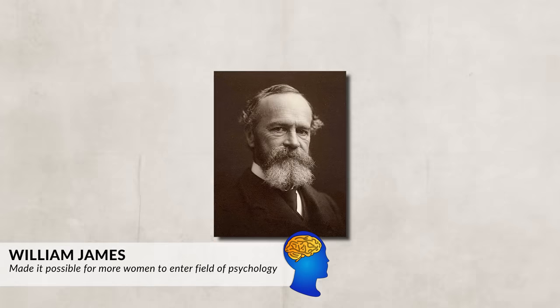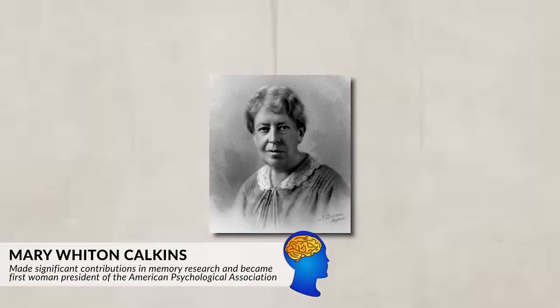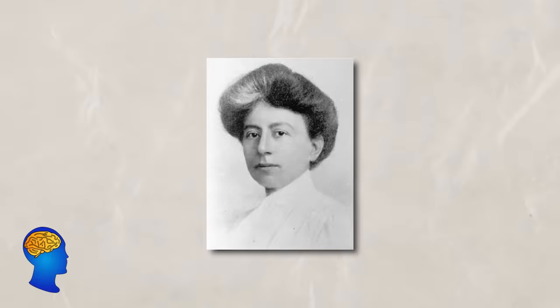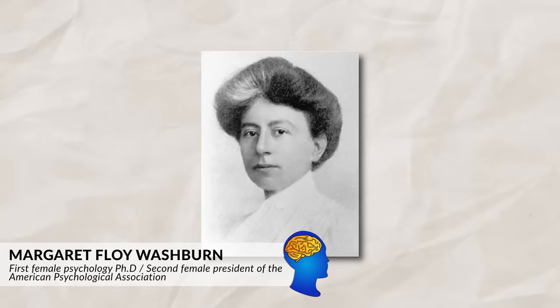Another impact William James had was making it possible for more women to enter the field. He taught Mary Calkins, admitting her into his graduate seminar even though many objected — all the other male students dropped out, so James tutored Calkins alone. Unfortunately, Harvard denied her the degree she had earned and instead offered her a degree from Radcliffe College. Calkins refused due to the unequal treatment, but still made significant contributions in memory research and became one of the first women presidents of the American Psychological Association. The honor of the first female psychology PhD went to Margaret Floy Washburn, who became the second female president of the APA in 1921.